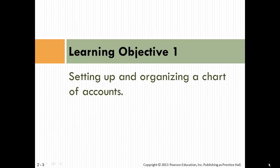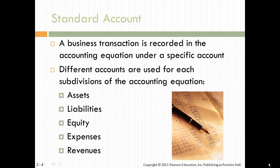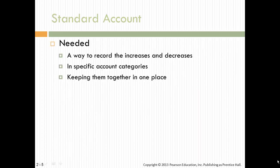The first learning objective is setting up and organizing a chart of accounts. Think of your chart of accounts like your index — it's where your business transactions are recorded. The different account types are assets, liabilities, equity, expense, and revenues. It's a way to record increases and decreases in specific account categories, keeping them all together in one place.